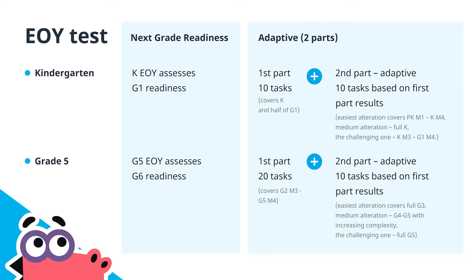The second part also consists of 10 questions, but the difficulty of these questions is based on the student's performance in the first part. If the student struggled, the second part will focus on topics from pre-K module 1 to kindergarten module 4. If they performed adequately, the questions will cover the entire kindergarten curriculum. If they excelled, the questions will cover topics from kindergarten module 3 to grade 1 module 4.